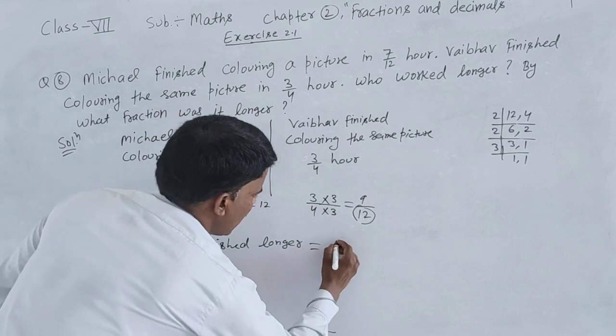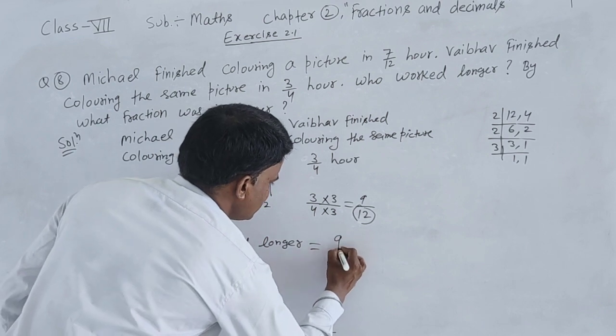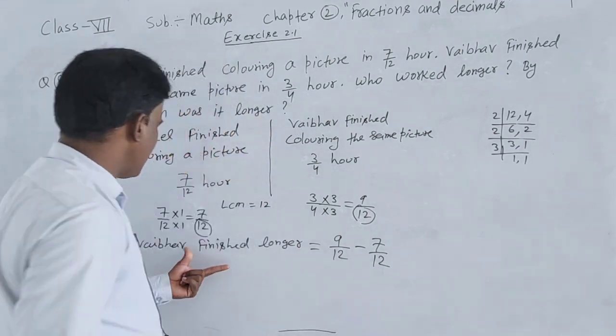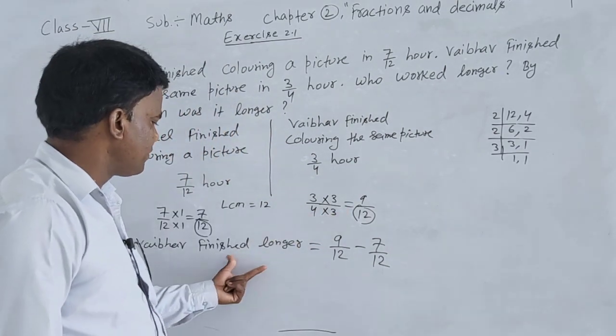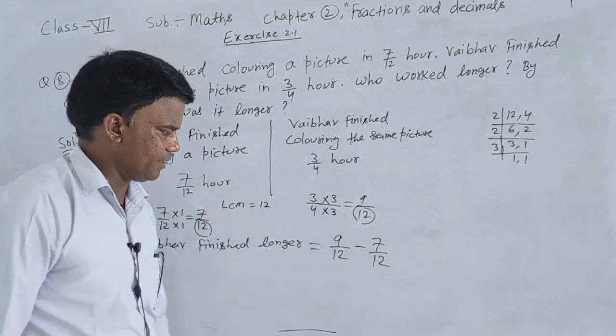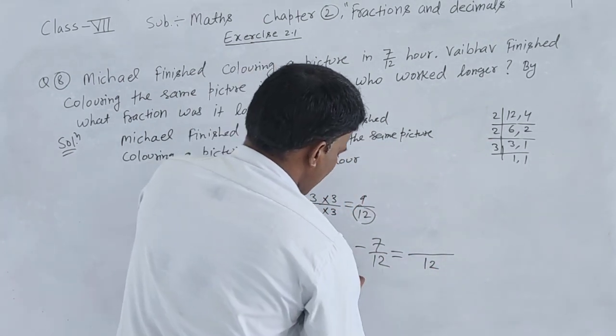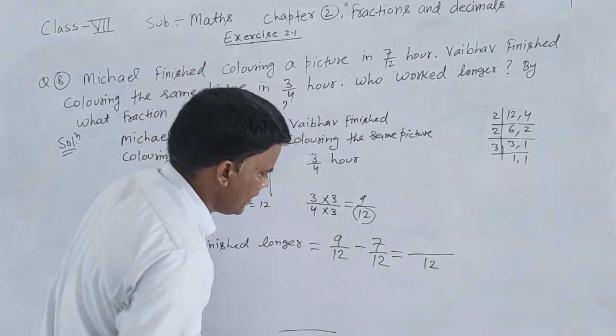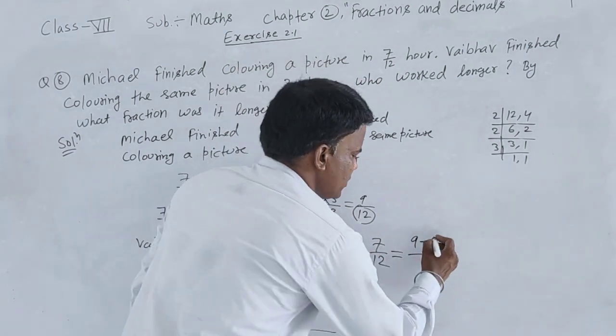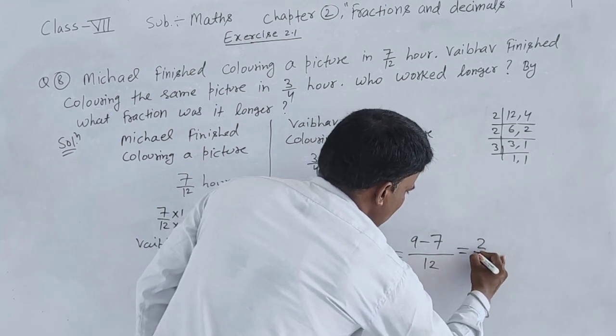How much longer? We subtract: 9/12 minus 7/12. Vaibhav's time is 9/12, Michael's time is 7/12. Denominators are same, so 9 minus 7 equals 2. Answer is 2/12.